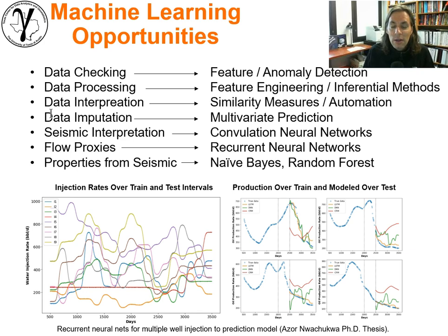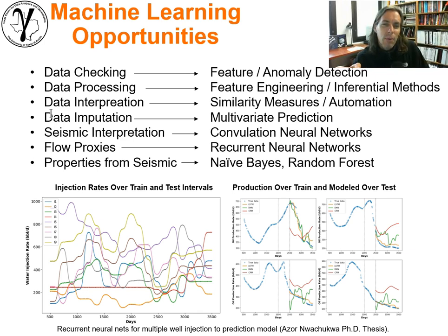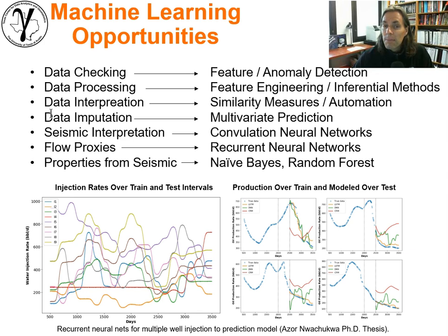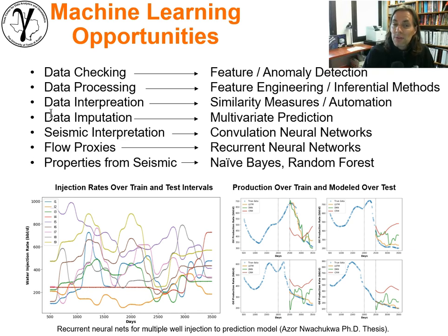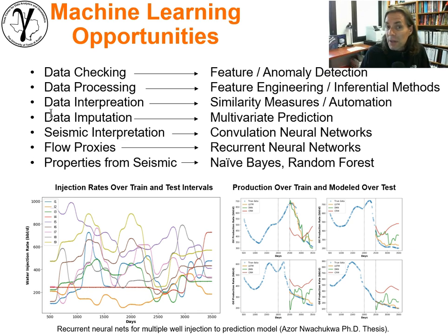Seismic interpretation has great methodologies available, like convolutional neural nets, that allow us to detect patterns and make predictions using image data — that's very powerful. Flow proxies involve making predictions of flow or the response of the subsurface to a complicated transfer function such as flow simulation — fluids, water, oil, gas, recovery from the subsurface, or even contaminant concentrations.